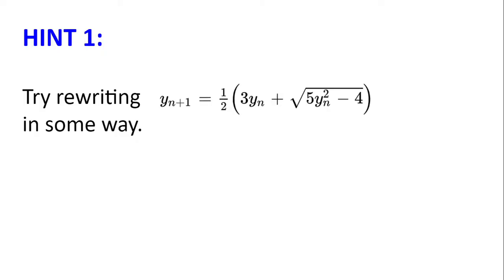Hint number 1. Try rewriting yₙ₊₁ equal to half of 3yₙ plus the square root of 5yₙ squared minus 4 in some way. This could be by getting rid of the square root.